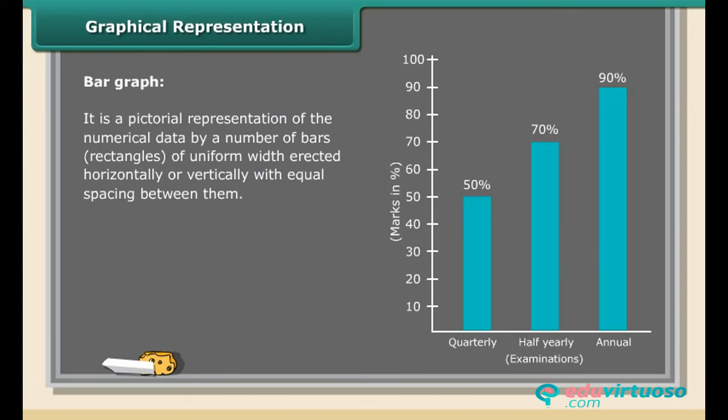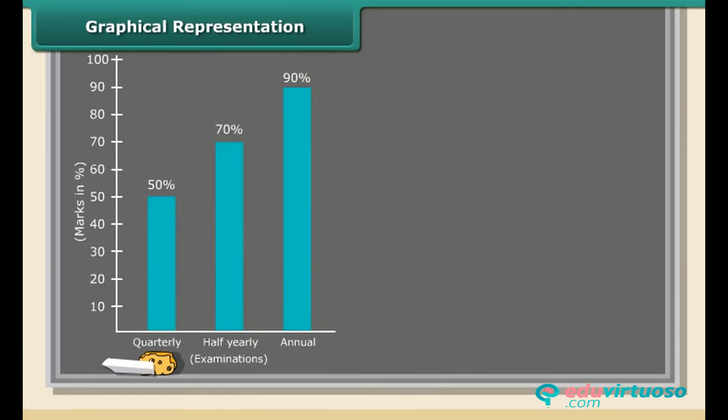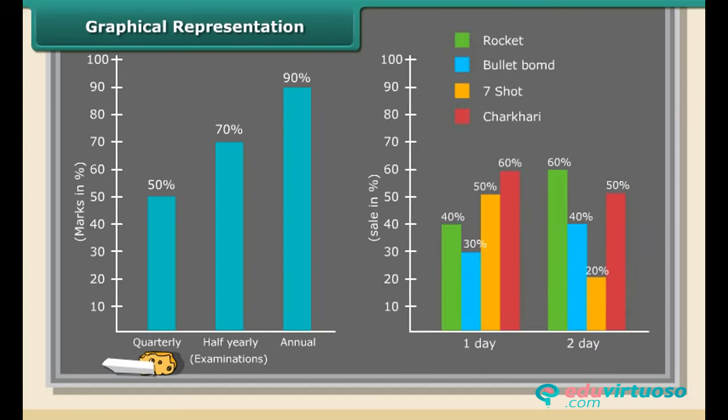From the above graph, we infer that Divya's total marks has been increasing which shows progress in her studies. Bar graphs can also have double bars. This graph gives a comparative account of sales of various crackers over a two-day period. From the above graphs, the first graph shows the comparison of three examinations of a student. The second graph shows that four varieties of crackers sales in two days.